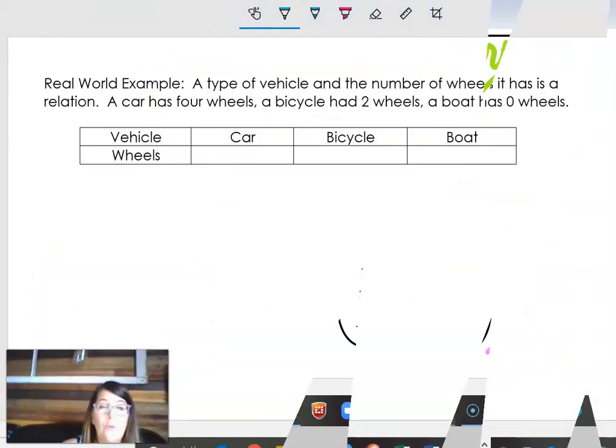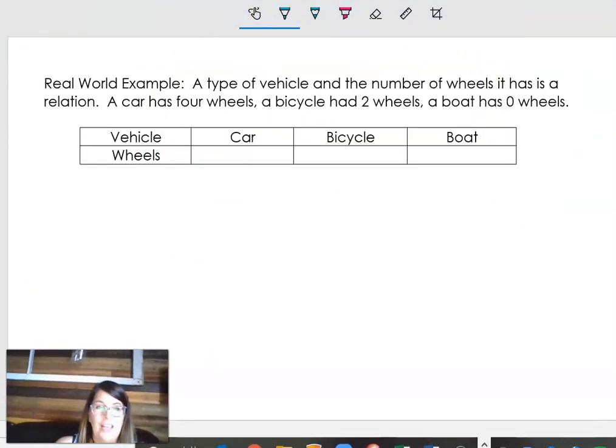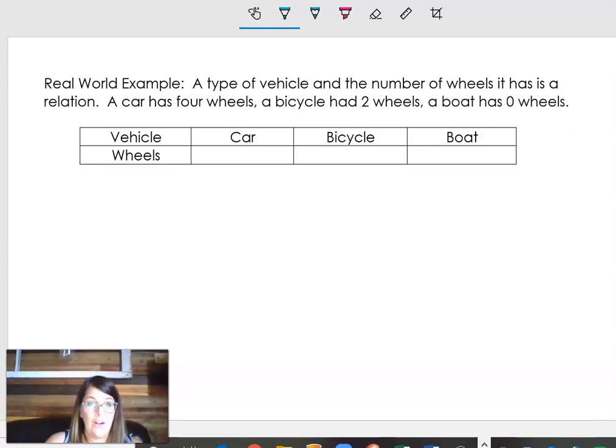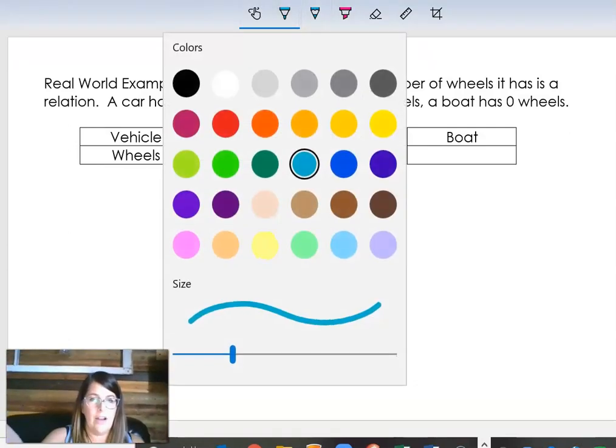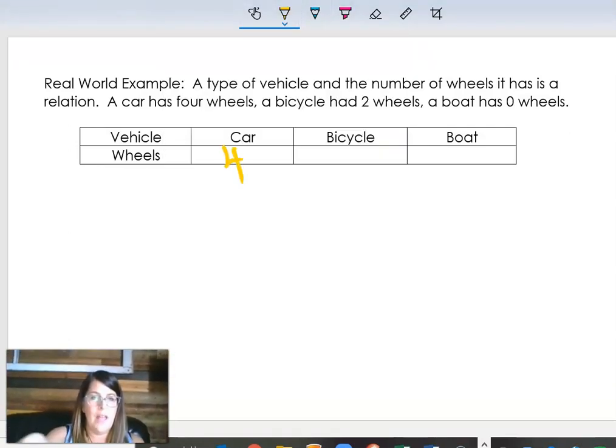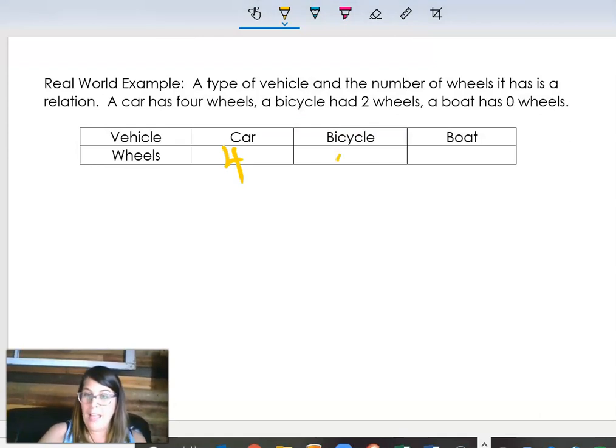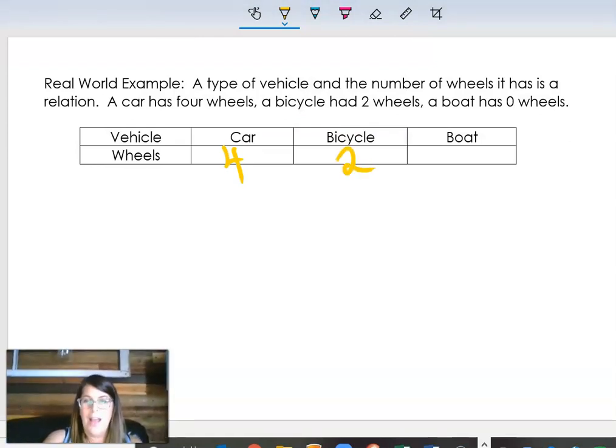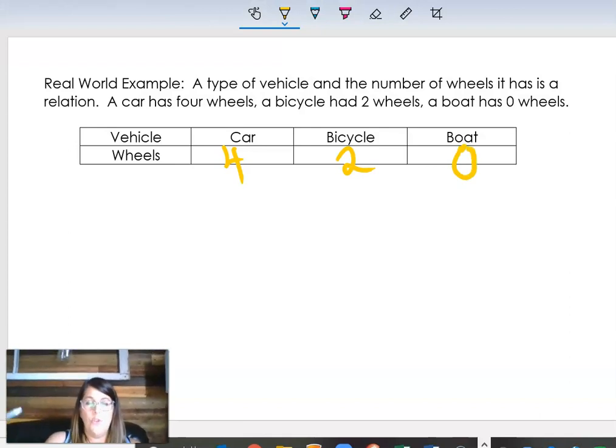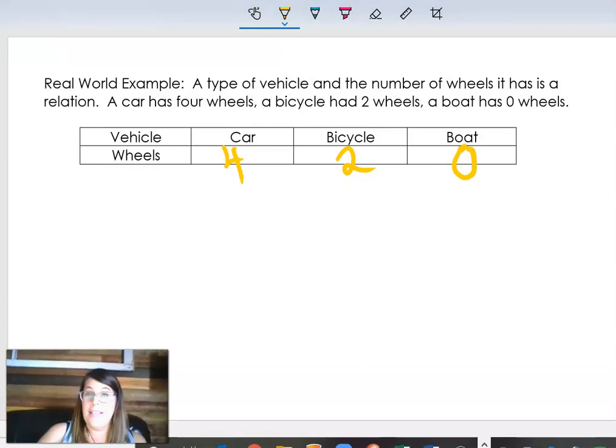That is the ordered pair 2, 7, 4 goes with the 6. See how that arrow is there? And then negative 5 goes with the 3. These are all different ways to represent relations. A real world example of a relation is if I'm talking about some sort of a vehicle and how many wheels it has. A car has 4, a bicycle has 2, a boat has 0. It's just a way to group your data. That is a relation.